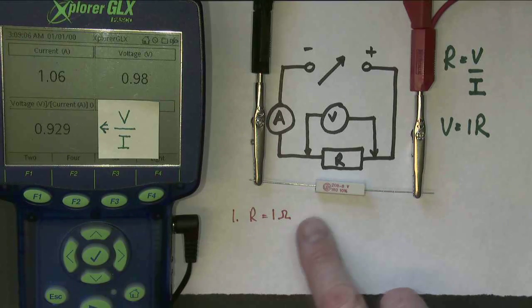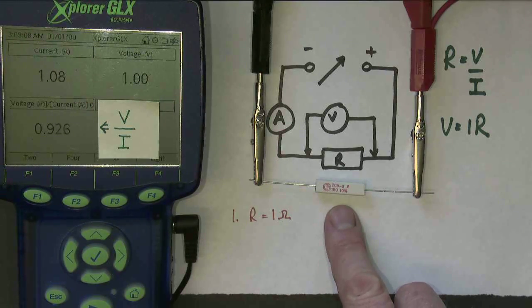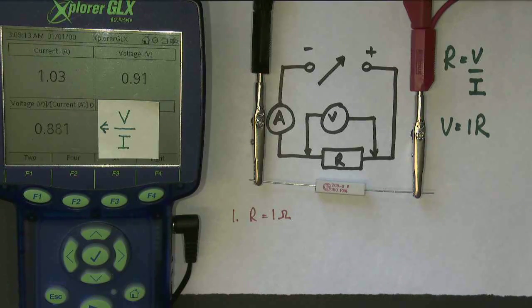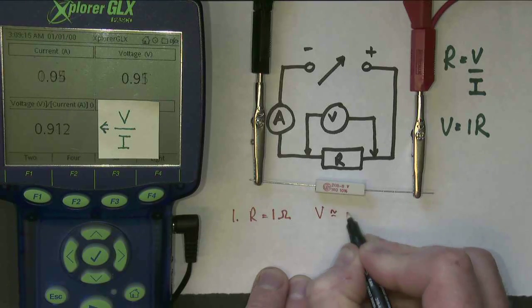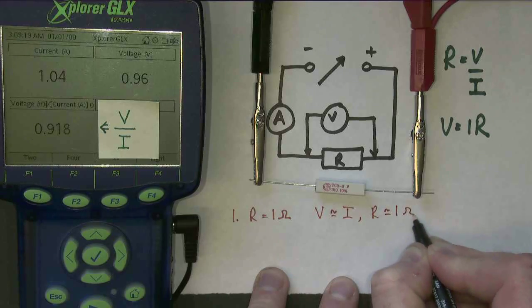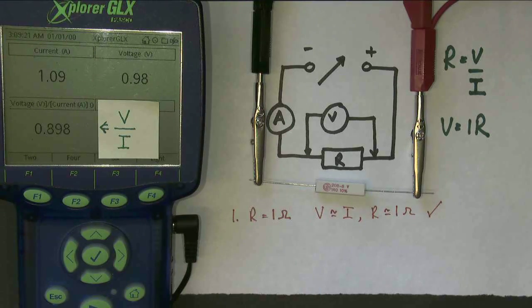So what's happening here is that the voltage and current are going up. The ratio V over I stays constant at 1. We found that V is approximately equal to I, and R is approximately 1 ohm. That's very good, that's what we wanted to see.